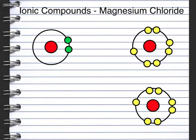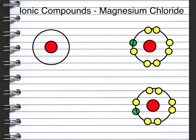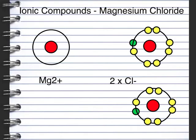Here we have magnesium chloride. Magnesium is in group 2 so it has 2 electrons in its outer shell, and chlorine as we saw previously has 7 electrons and can accept 1 electron. Because magnesium has 2 electrons, you need 2 chlorine ions to accept those electrons. So we have an Mg2+ ion and 2 Cl- ions - you need 2 chlorides to balance it out, giving a formula of MgCl2.